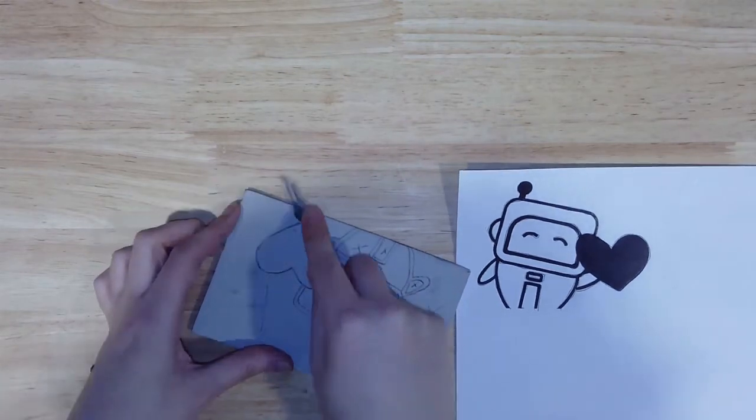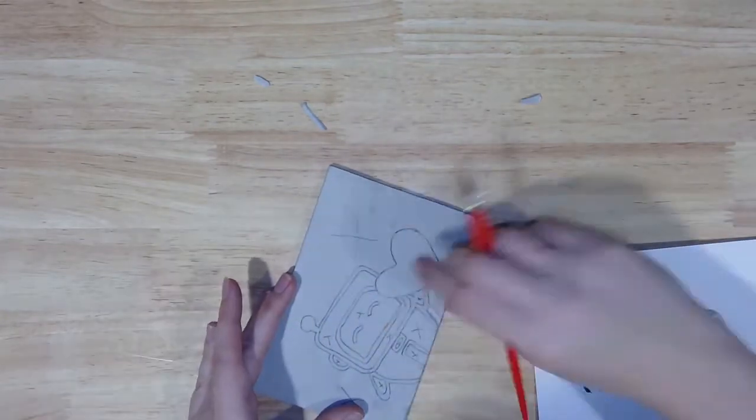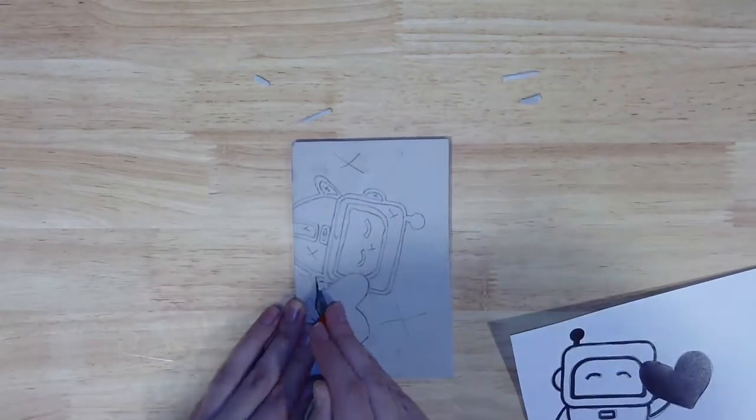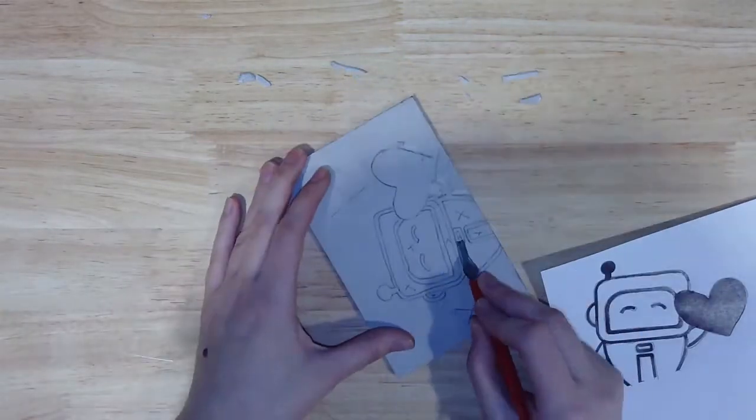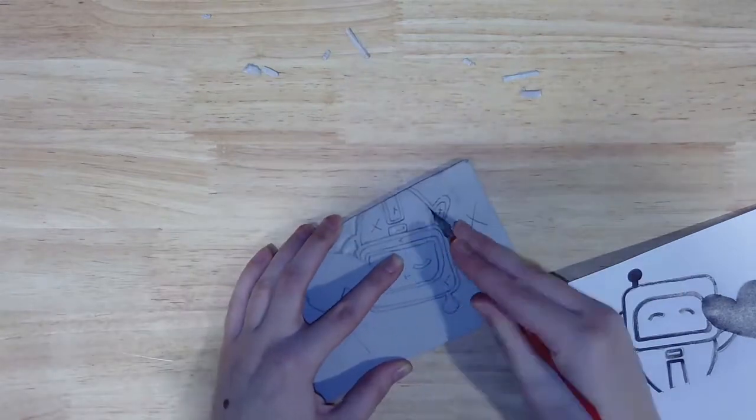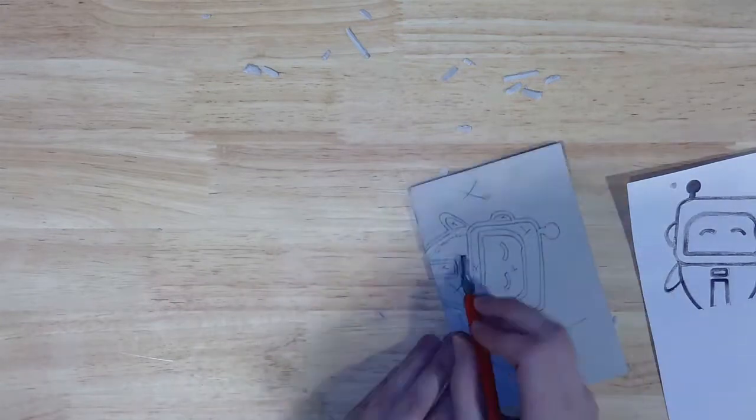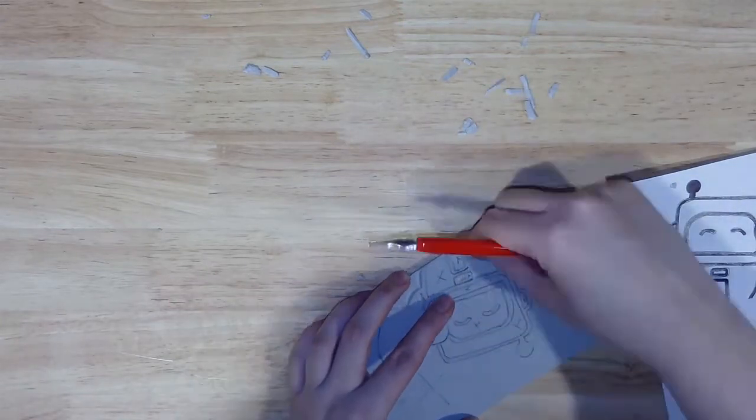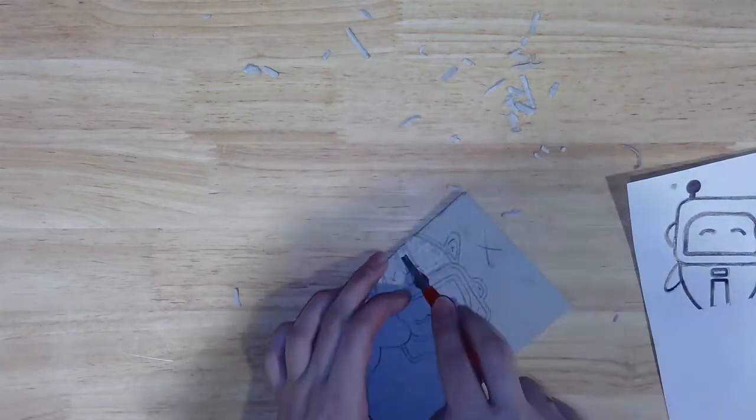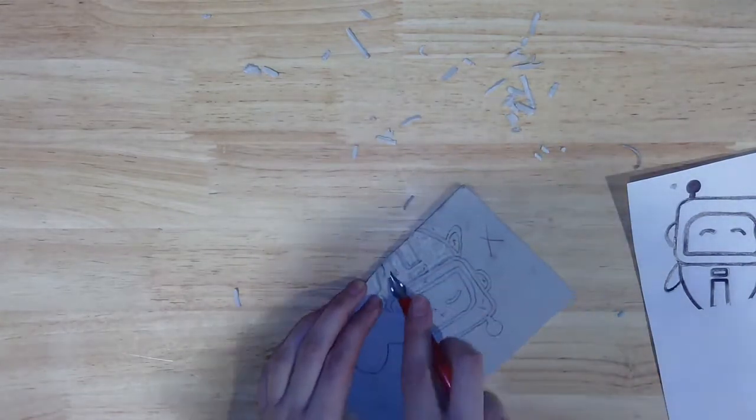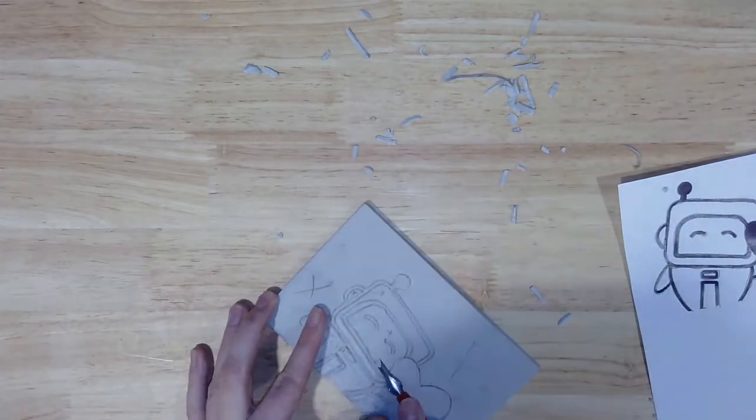Remember that we're carving away any parts of the design we want to remain unprinted. Keep your original sketch handy so you can double check as you go. When possible, I recommend starting with the parts of your design that are more detailed since you'll have the most precision when the block is still mostly intact. Working from the center out is also a good idea. We're aiming to have all of the white space in your design carved about an eighth to a quarter of an inch below the printing parts. This step can take a while and it's important not to rush it, so it's a good time to put on some music or an audiobook to listen to as you work.